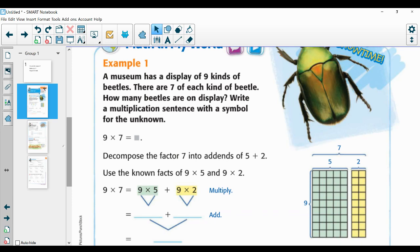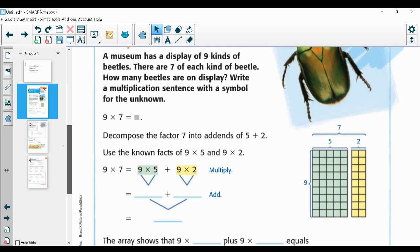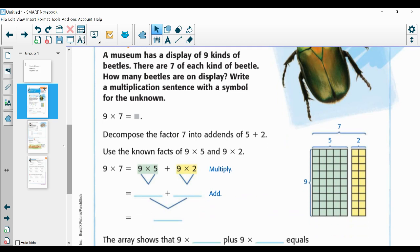Let me read it again. A museum has a display of nine kinds of beetles. There are seven of each kind of beetle. How many beetles are on display? Okay, so we want to know how many beetles are all together. We're going to write a multiplication sentence with a symbol for the unknown. So we have nine groups of seven in this first problem. We're going to decompose the factor seven into addends of five and two.